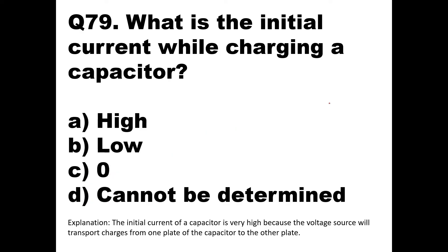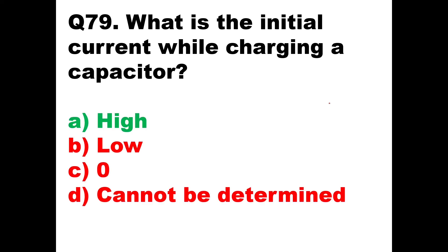Question number 79: What is the initial current while charging a capacitor? Options are high, low, zero, or cannot be determined. The initial current of a capacitor is very high because the voltage source transports charges from one plate to the other. The current decreases toward the end. Option A is the right answer: high.